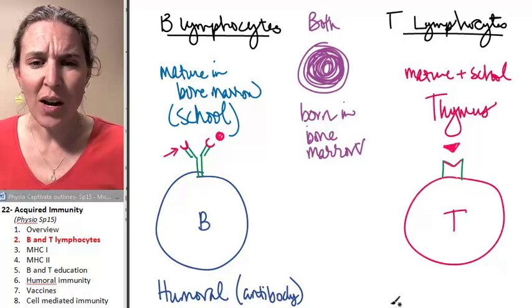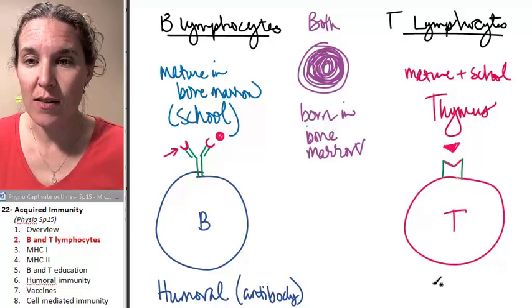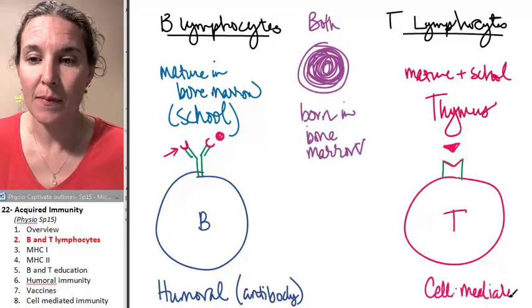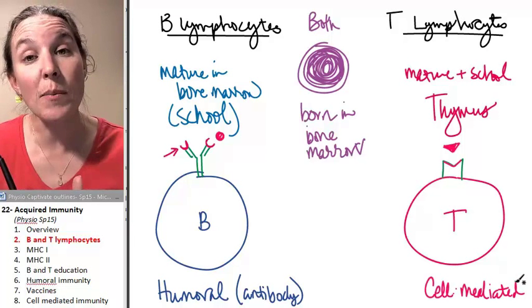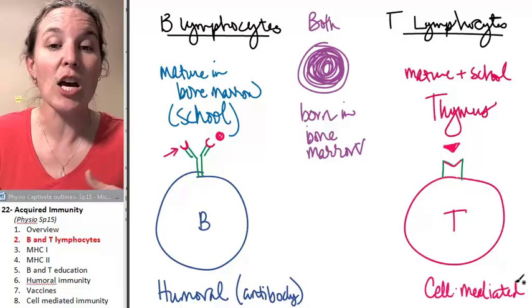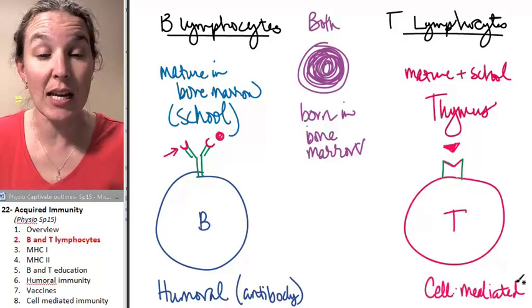I want to tell you that this is also called cell mediated immunity. So cell mediated immunity is facilitated by T lymphocytes. Humoral immunity is facilitated by B lymphocytes.